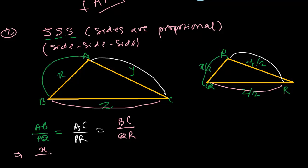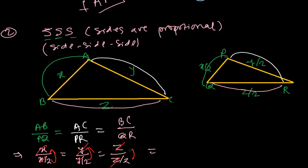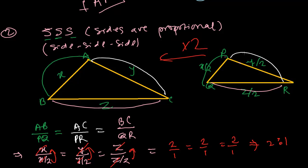AB is X and PQ is X/2, so AB/PQ = X ÷ (X/2) = 2. AC is Y and PR is Y/2, so AC/PR = 2. BC is Z and QR is Z/2, so BC/QR = 2. All ratios equal 2/1, meaning triangle ABC is exactly twice triangle PQR. Since all sides are in the same ratio, the sides are proportional and the two triangles are similar.